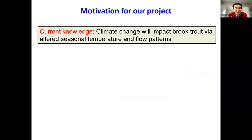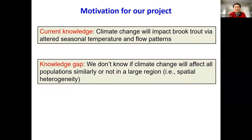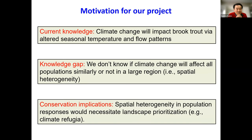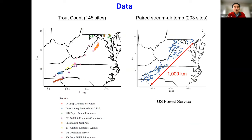This is one biological mechanism by which altered flow may lead to life-stage-specific responses to climate change, because adults are less vulnerable to high flows than YOY — they can swim much better and can find refugia. Our knowledge so far comes from analysis of individual datasets in a relatively small region. We don't yet know if climate change will affect all populations similarly across a large region such as the Southeast.